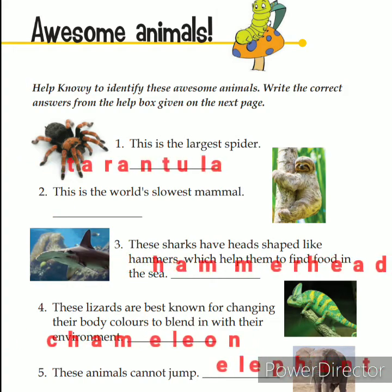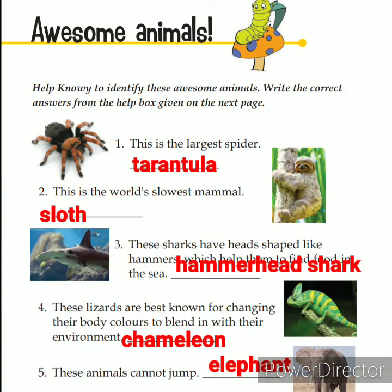Here you will know some facts about animals. Look at the first — this is the largest spider. The name of the largest spider is Tarantula. The second: this is the world's slowest animal — the picture is of a Sloth. The third: these sharks have heads shaped like hammers, which help them find food in the sea.